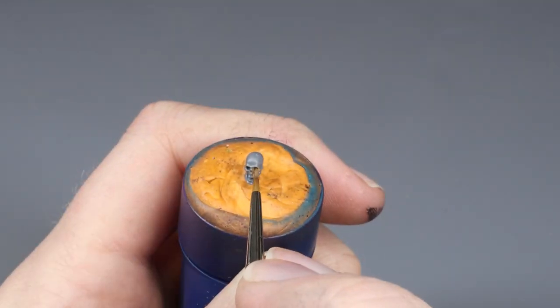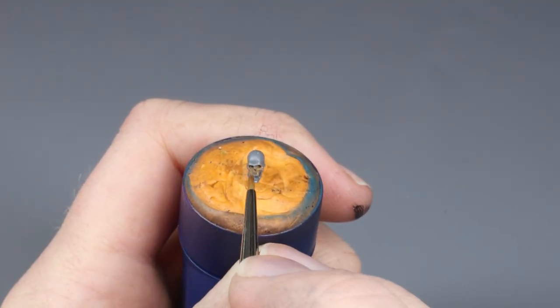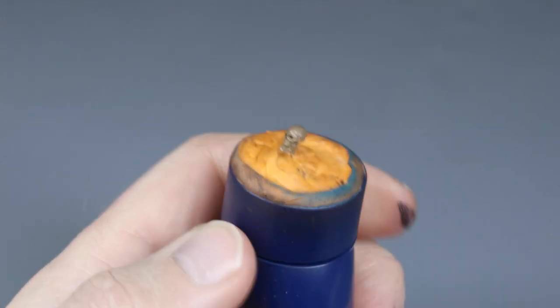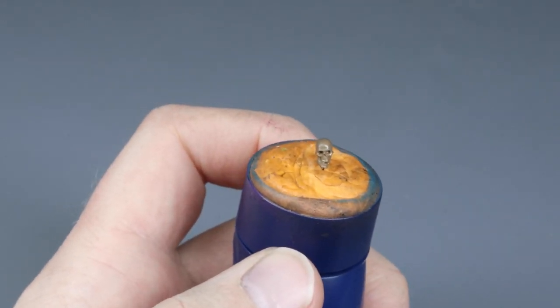I make sure I get paint into the eye socket and all other hard to reach spots. With a solid base coat of Steel Legion Drab, we move on to the next step which is to apply the light.